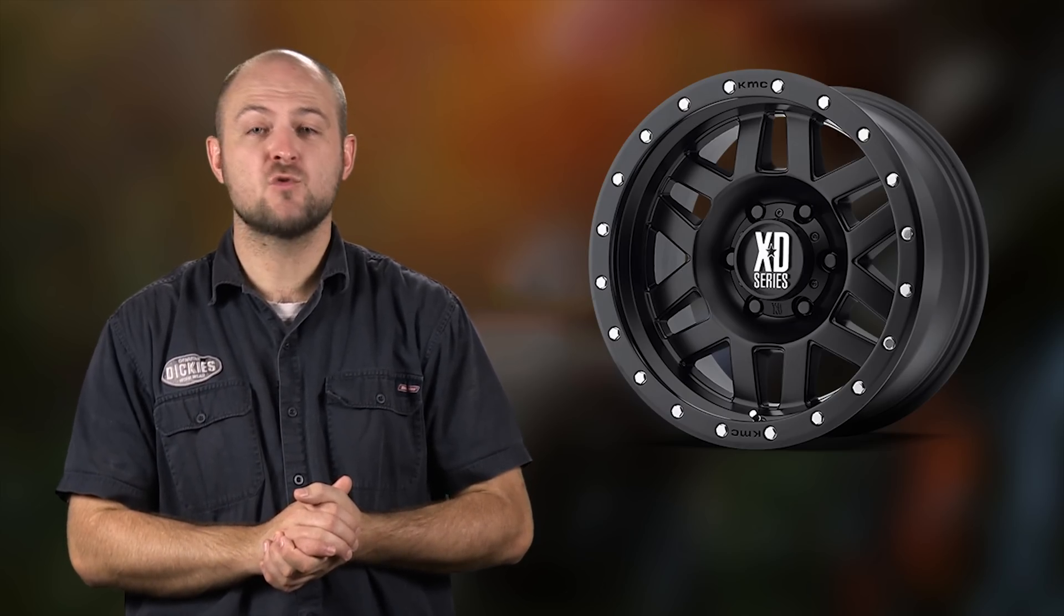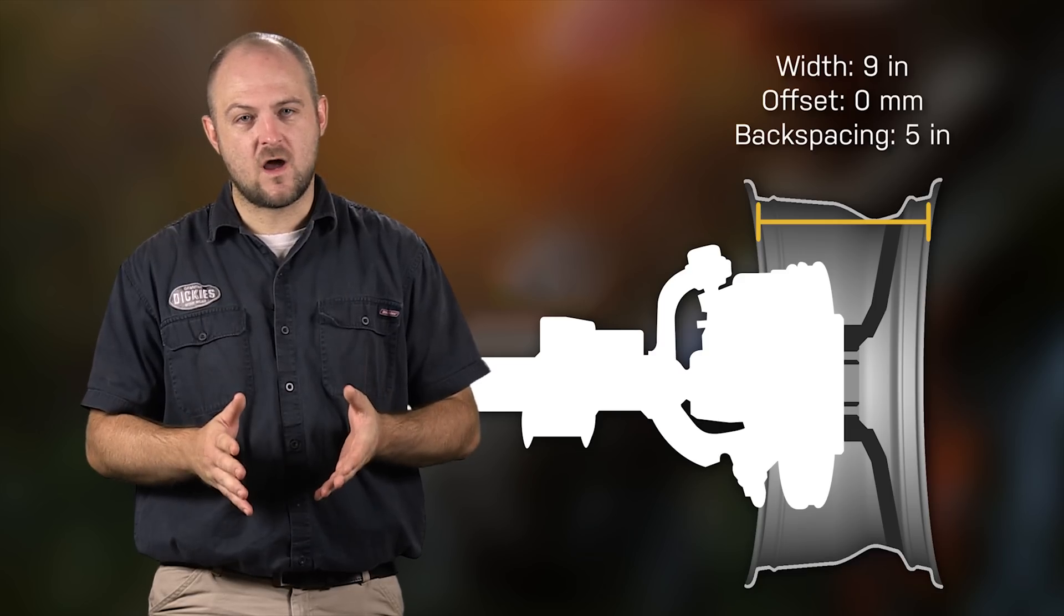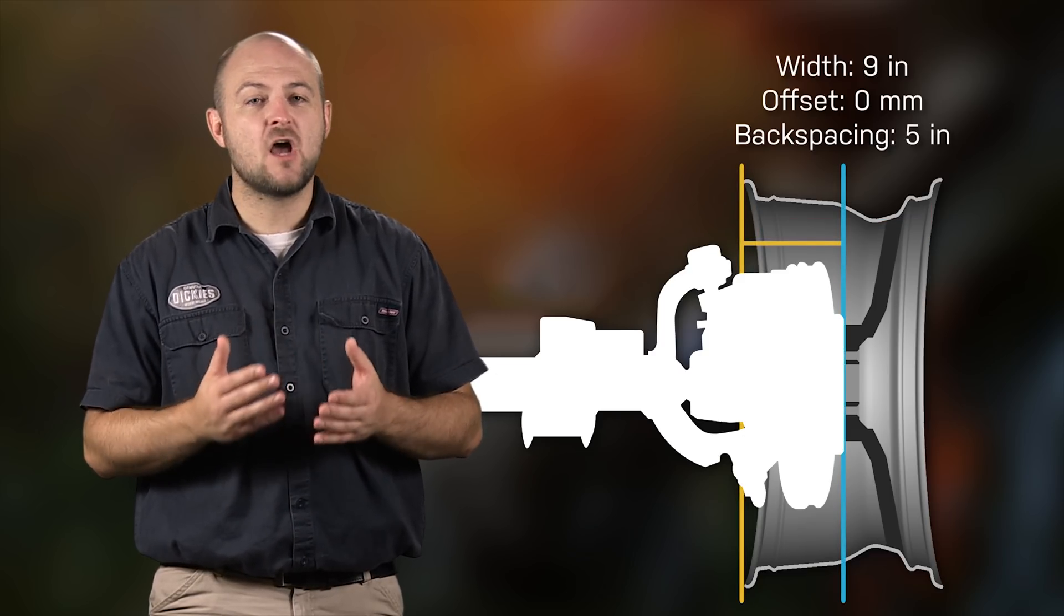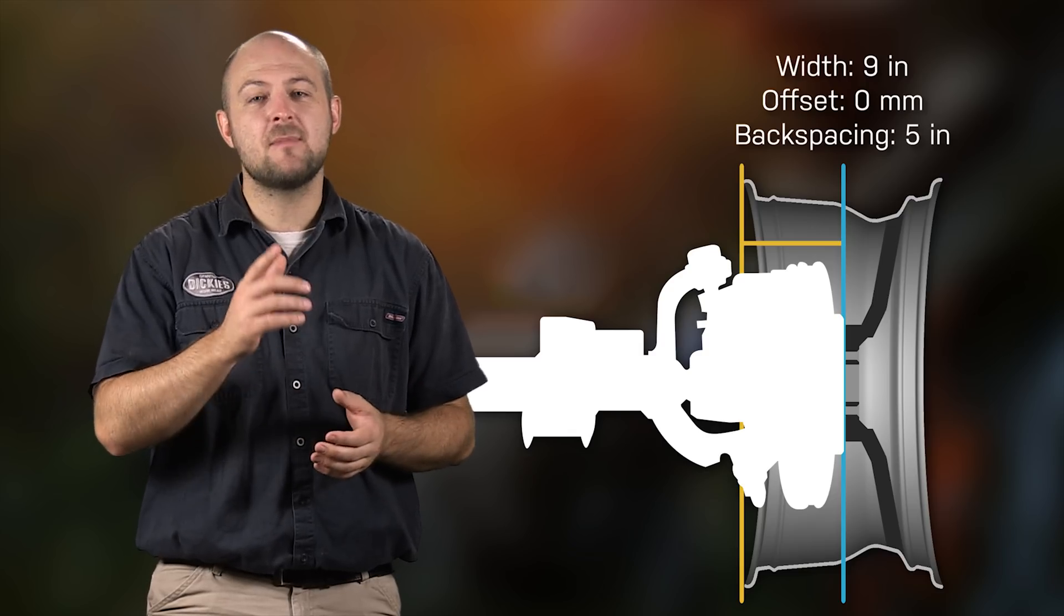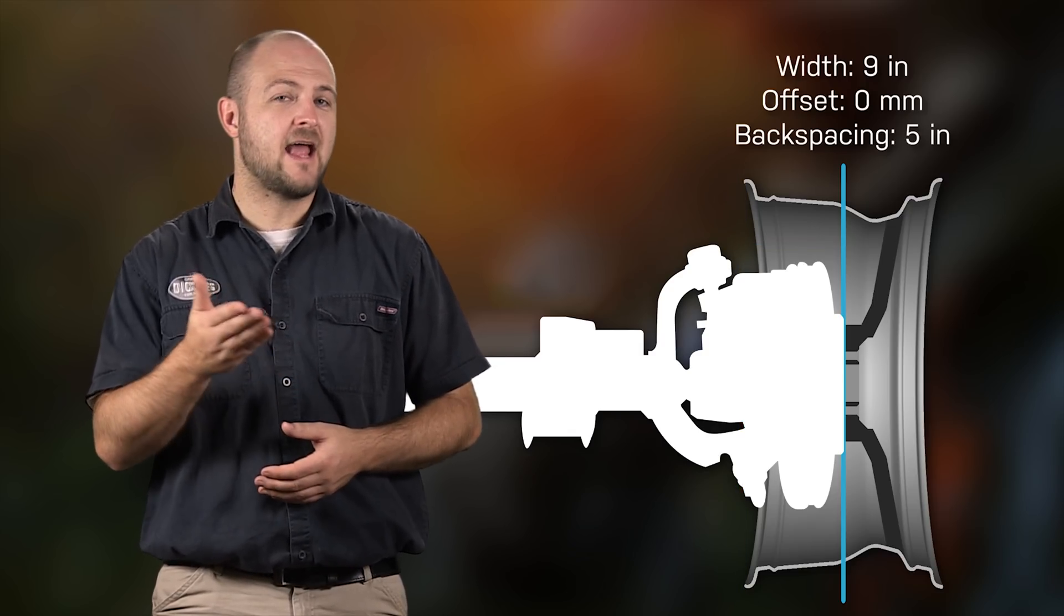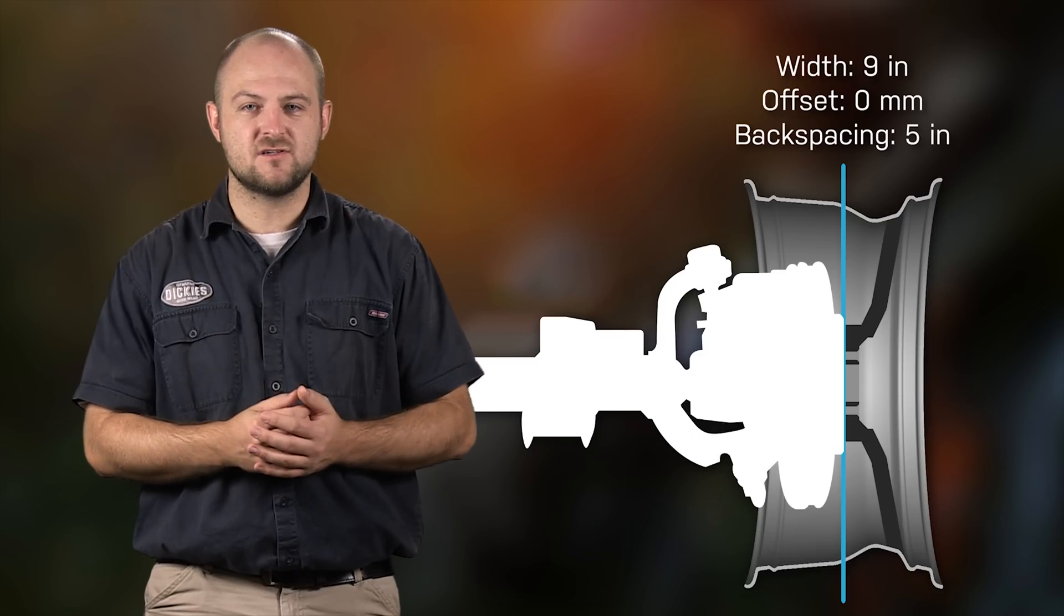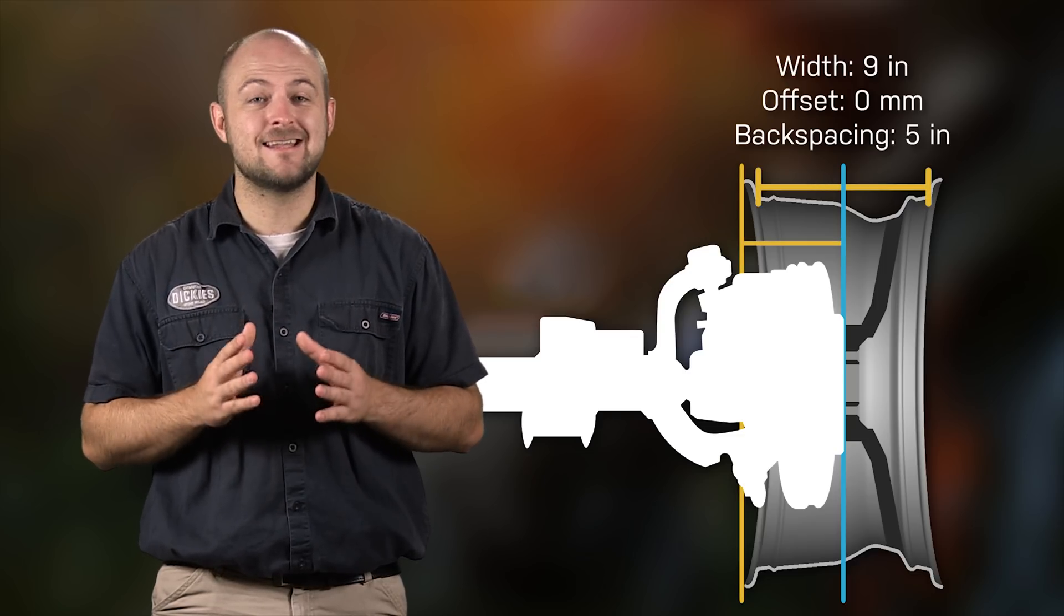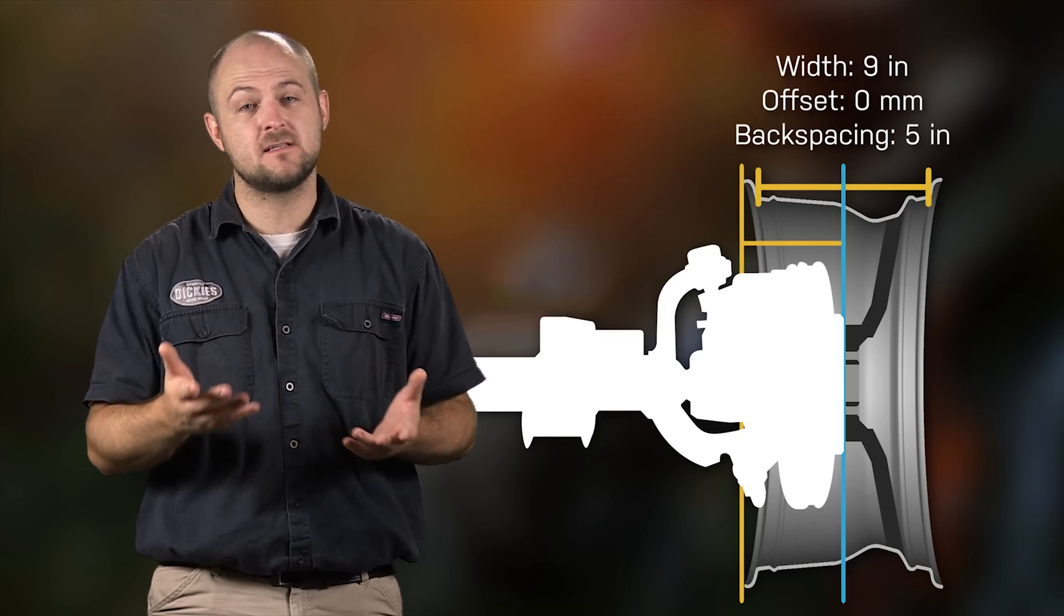We took the stats of three 20 inch tall KMC XD128 machete wheels for this example. The first wheel is 9 inches wide. It has an offset of zero and a backspacing of 5. As we learned earlier, since the offset of the wheel is zero, it is mounted directly in the center. Now if you did the math in your head, you'll realize that half of 9 inches is 4.5 inches, so how can the backspacing be 5 inches? Easy, the 9 inch wheel width does not include the lip, but the backspacing does.